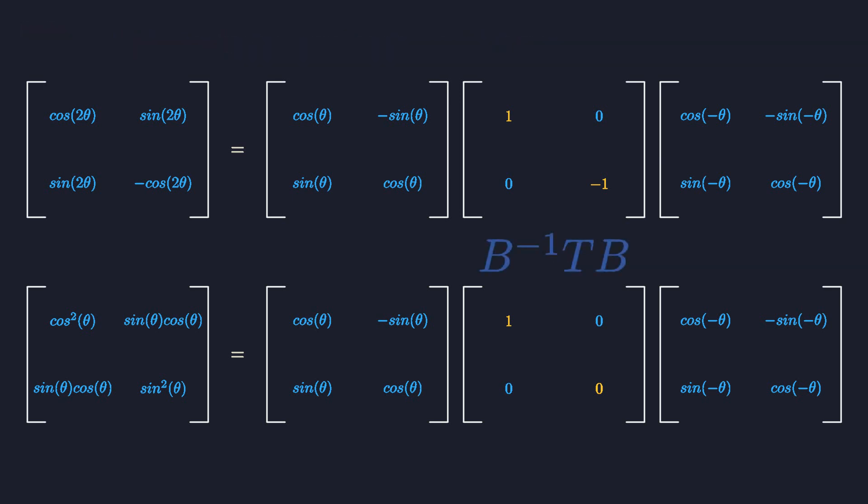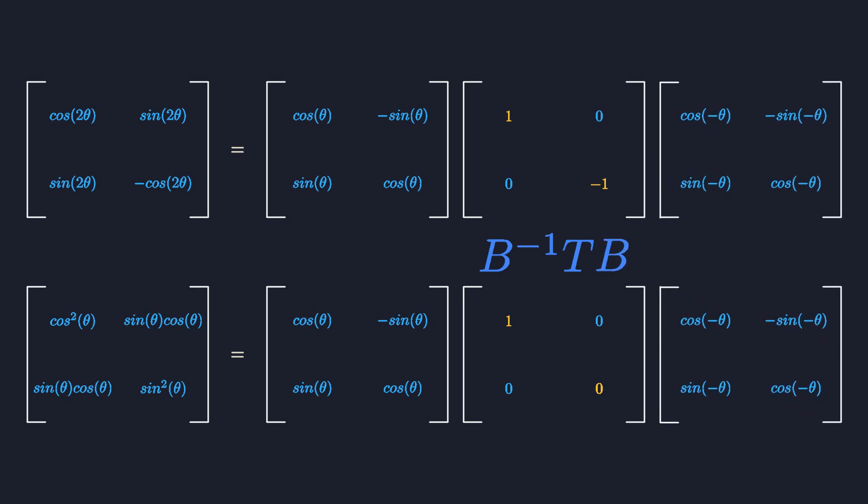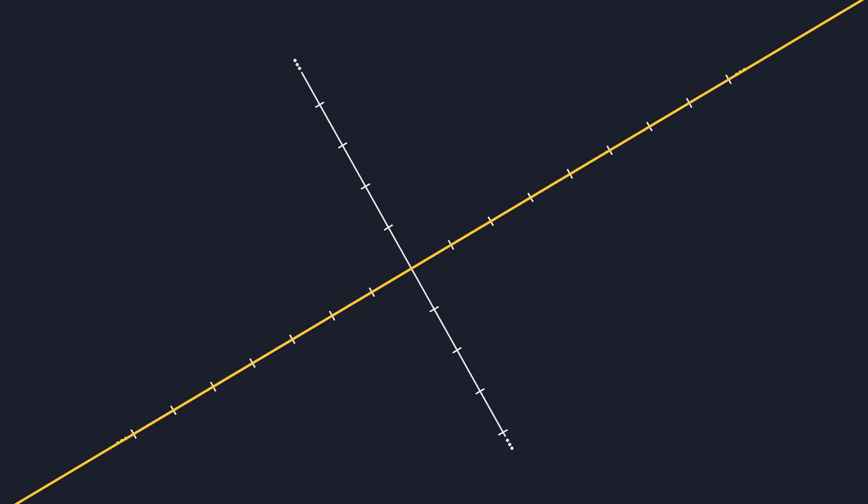We can write both of these sandwich products in this form. The B on the right rotates the slanted line to horizontal, and the inverse of B on the left rotates it back at the end. But there is a subtly different way of doing the whole thing. Instead of rotating the line, we could also rotate our coordinate system. This is a subtle distinction, so I will take it slow.